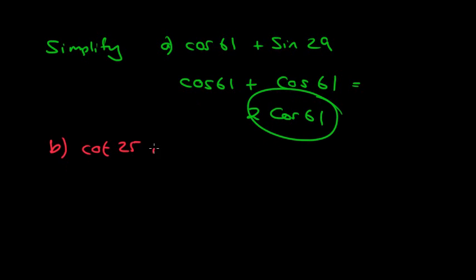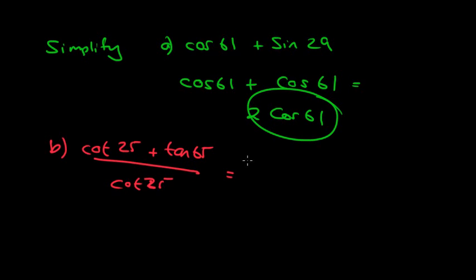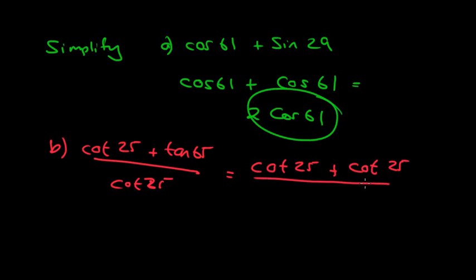A more challenging example: simplify (cot 25 plus tan 65) all over cot 25. We want an exact answer, not an approximation. Converting tan 65 to cot: cot(90 minus 65) equals cot 25. So we have (cot 25 plus cot 25) over cot 25. Cot 25 is a common factor, giving us one plus one, which equals 2.